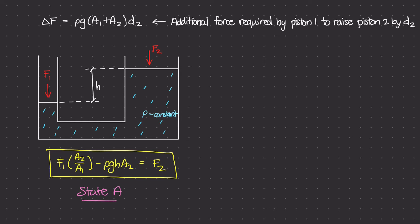And remember, this equation that we're looking at, that we're trying to derive, this delta F is not F1, but it's the additional force that we need to add to F1 so that we can move piston 2 up by an amount D2.